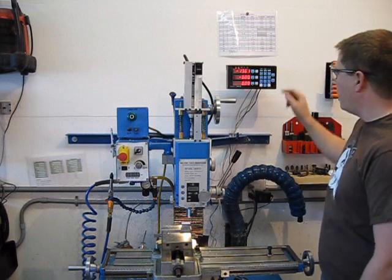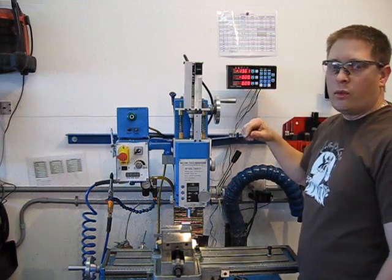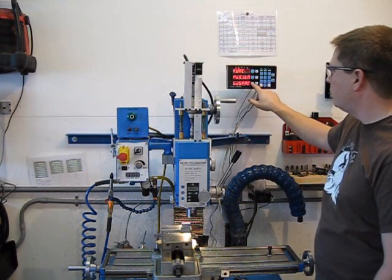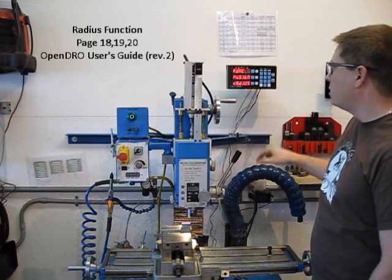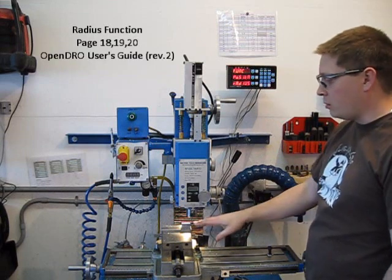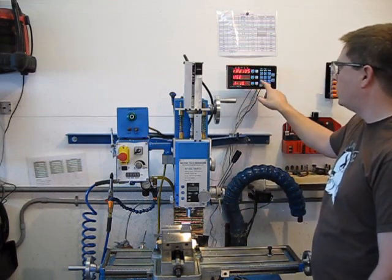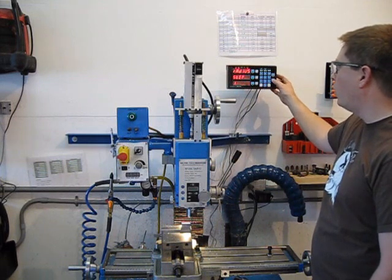So the next step is we're going to call up the radius function that we programmed. The press function again will be position, radius. So this is the starting feature. This is where everything has to be zeroed off. I'm going to press enter. Now it's going to ask you which program. I'm going to tell it program one.